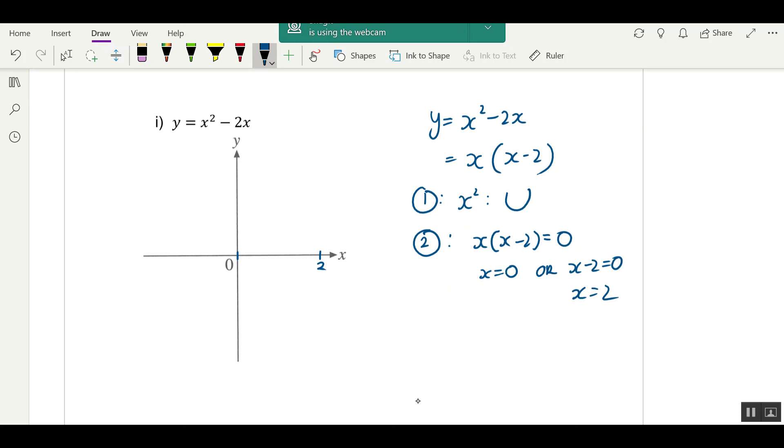And it's a U shape. So what I need to do? Just make sure you draw a nice U shape. And the y-intercept you already found is also 0. So there's nothing else to have. y equals to x squared minus 2x. Thank you.